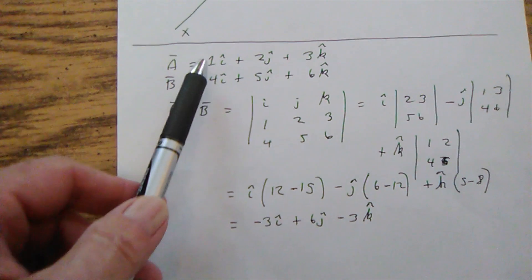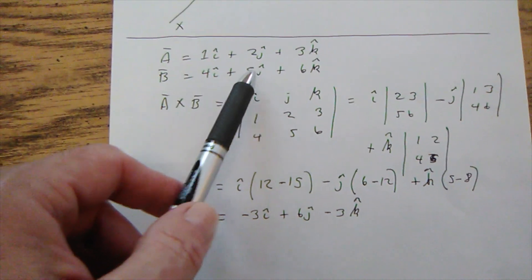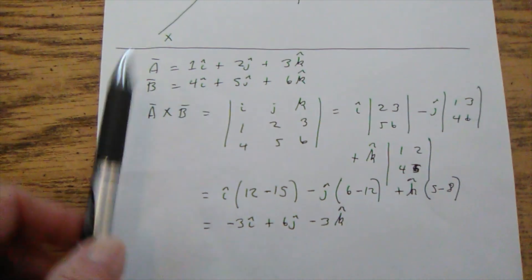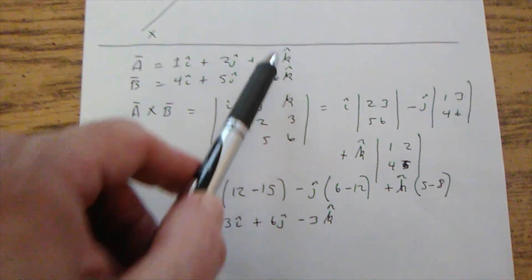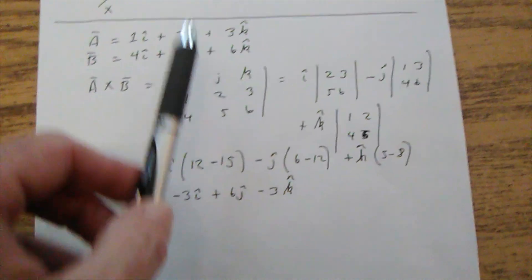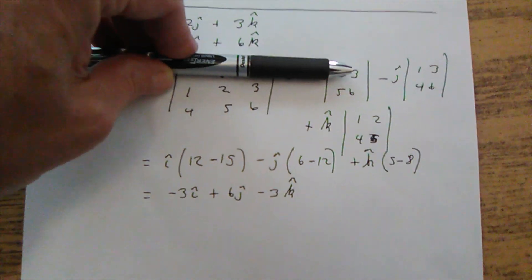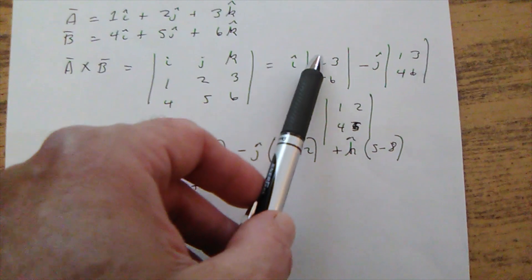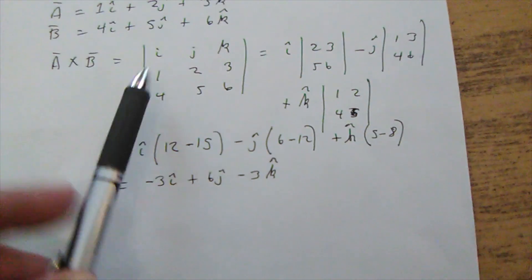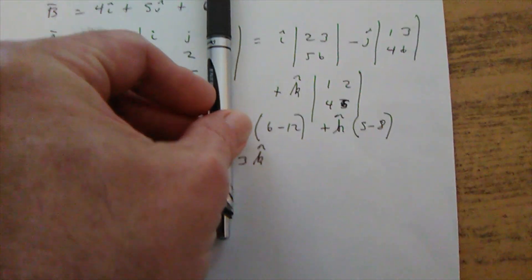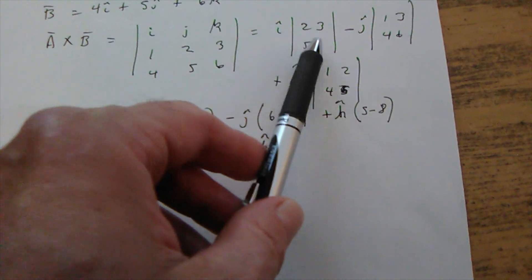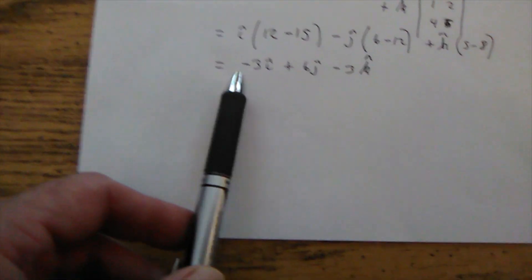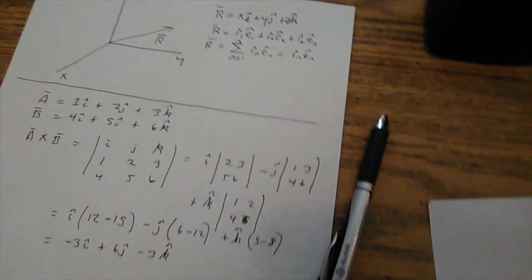Back in the day, if I had a problem with vector a = 1i + 2j + 3k and vector b = 4i + 5j + 6k and I wanted the cross product, a×b is a vector, so I write down the unit vectors i, j, k, then the components: a_1, a_2, a_3 and b_1, b_2, b_3. You block out the first column and row to get the i component — that's the 2×2 determinant with 2, 3, 5, 6. Then block for j giving 1, 3, 4, 6, and for k giving 1, 2, 4, 5. For the i component: 2×6 minus 3×5. You do that all the way through and you get -3i + 6j - 3k.